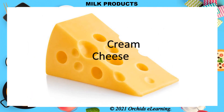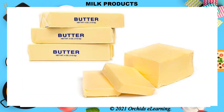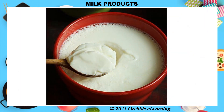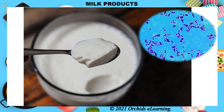Cheese is made from the curdled milk of cow, goat, sheep, or buffalo. Cream is made by collecting the top fatty layer of milk. Butter is made by churning fresh cream. Ghee is made by gently heating butter and removing the solid matter. Curd is made by adding a small sample of curd to warm milk; the bacteria present in the curd sample turn the milk into curd.